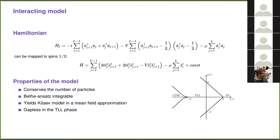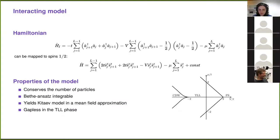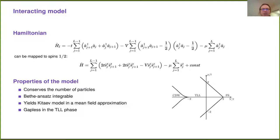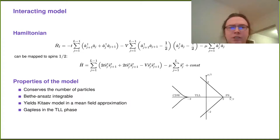Unlike the Kitaev model, this model conserves the number of particles — there is no gauge symmetry breaking and no superconductivity. It is a Bethe ansatz integrable model, and one can construct an exact solution using Bethe ansatz even with open boundary conditions. The Kitaev model is a mean-field approximation, which is why we suppose there is something closely resembling Majorana physics in this system. Unlike the Kitaev model, in the Tomonaga-Luttinger liquid phase the system is gapless.